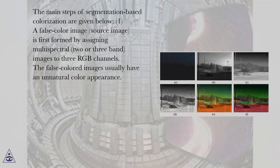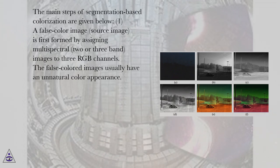The main steps of segmentation-based colorization are as follows. Step 1: A false color image, the source image, is first formed by assigning multispectral two or three band images to three RGB channels. The false colored images usually have an unnatural color appearance.